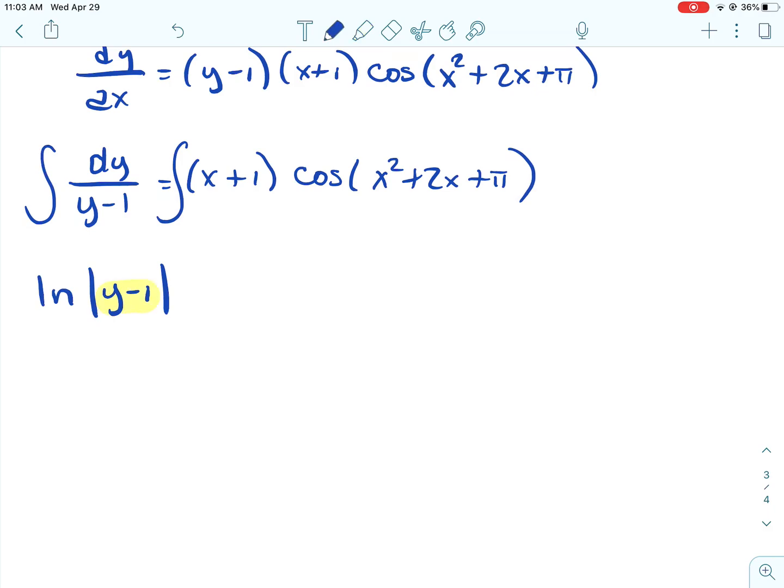So when I'm looking at this dy over (y - 1), the (y - 1) doesn't have a power. So when I find the integral of that, it's going to be the natural log of the absolute value of (y - 1). And then just to double check what's in there, the derivative of (y - 1) with respect to y is 1. So we don't have to do anything else to that. That is not a big deal.